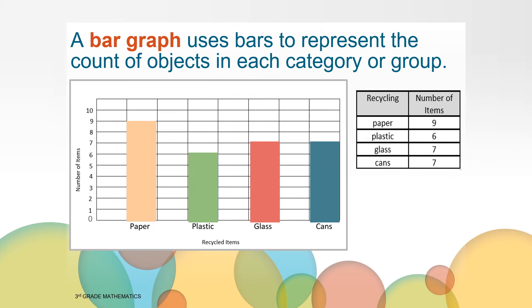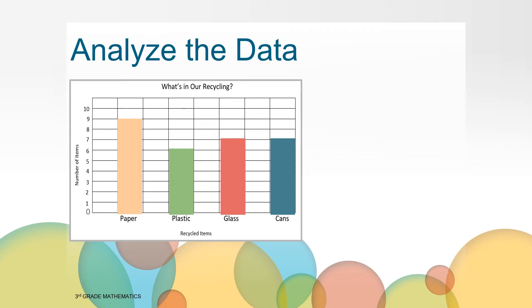Now that we have all of the data represented by bars on our graph, there's one more thing we need to remember to do. We need a title for our graph to communicate to others what our graph is about. What title would you give this graph? If you have been recording on your own paper, go ahead and write it down. Tell us what title you gave to the graph. Here's what we decided to use. What's in our recycling? It's okay if it's different from your title, as long as you are sure that your title gives others enough information so they know what your graph is about.